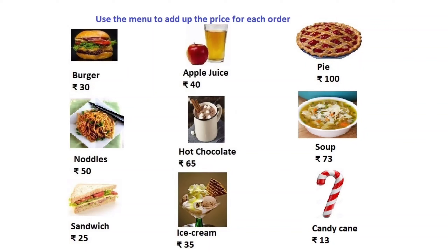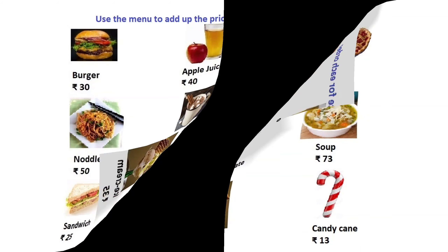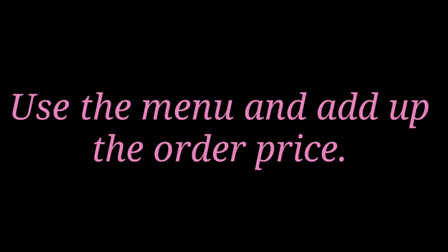Hot chocolate 65 rupees, soup 73 rupees, sandwich 25 rupees, ice cream 35 rupees, and candy cane 13 rupees. Now what you have to do is order from the menu and add up the price for your order.